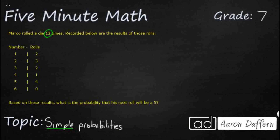This is a simple probability, and if we were looking at our sample space — which is not what they gave us; they gave us the experimental data — sample space is simply a list of all the different possibilities of what he could have gotten. We know that there are 6 possibilities: 1, 2, 3, 4, 5, and 6.